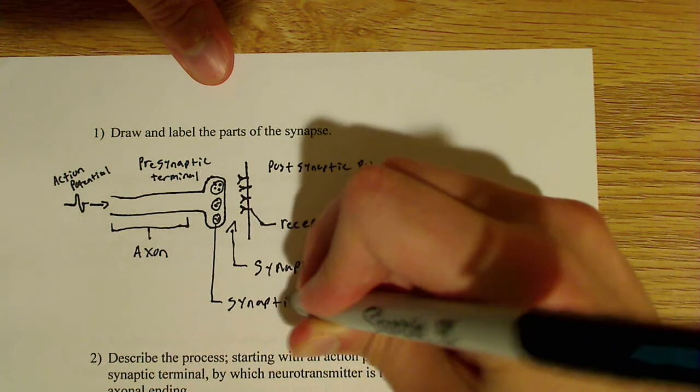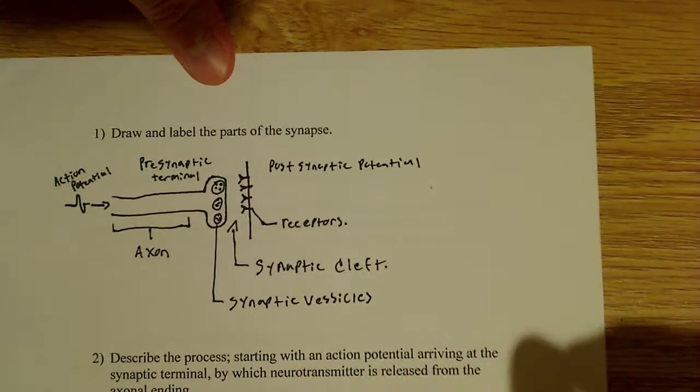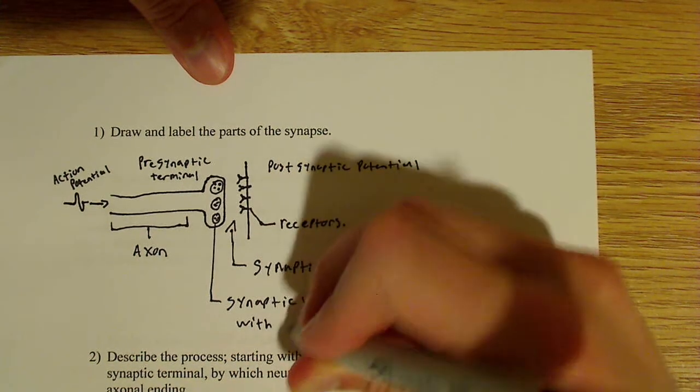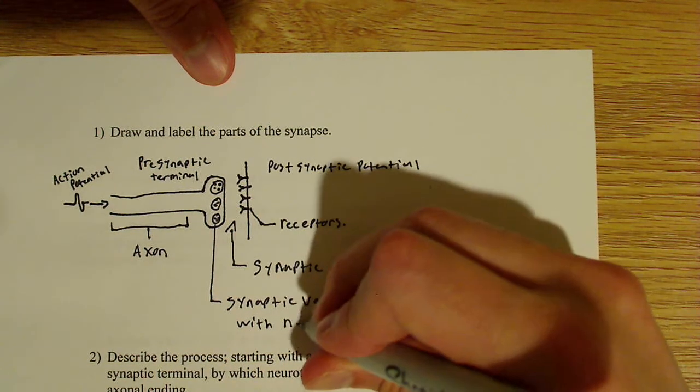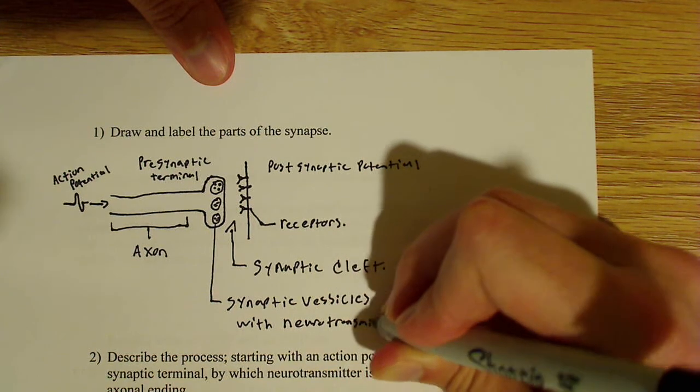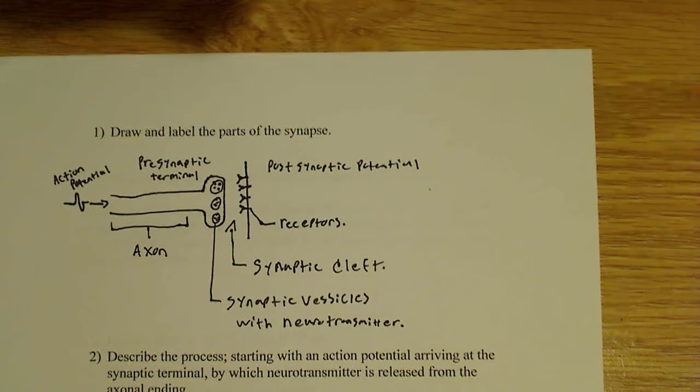So these vesicles here are what's known as, you might have guessed it, synaptic vesicles. So those are synaptic vesicles with neurotransmitter. Essentially the synaptic vesicles is what contains the neurotransmitter.